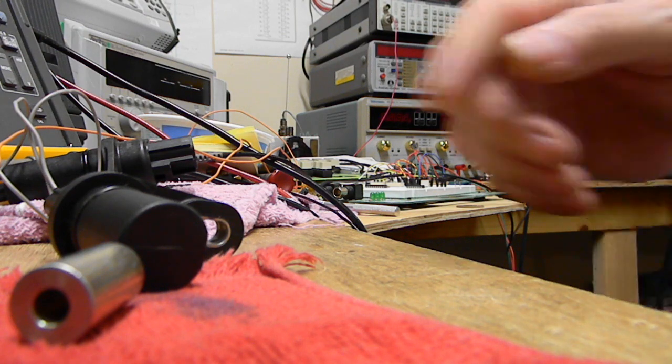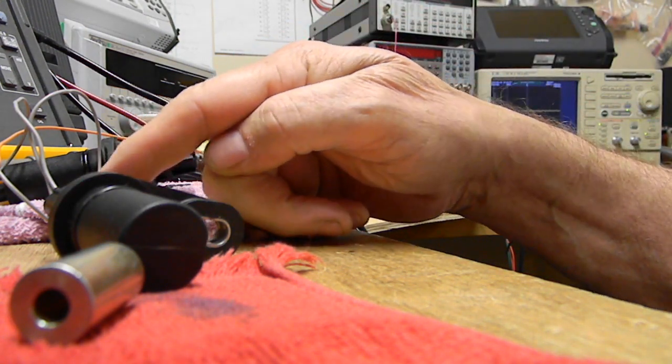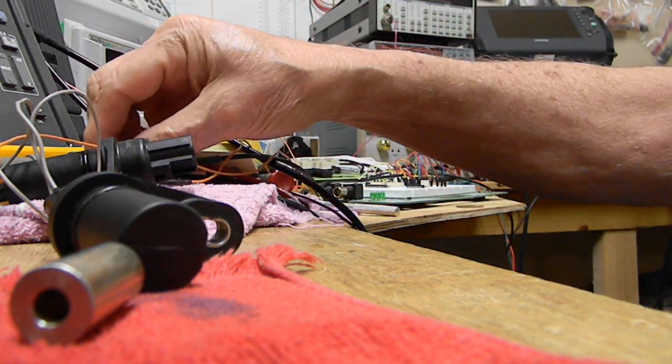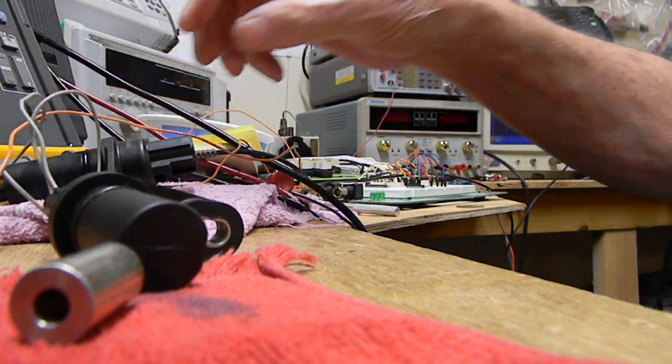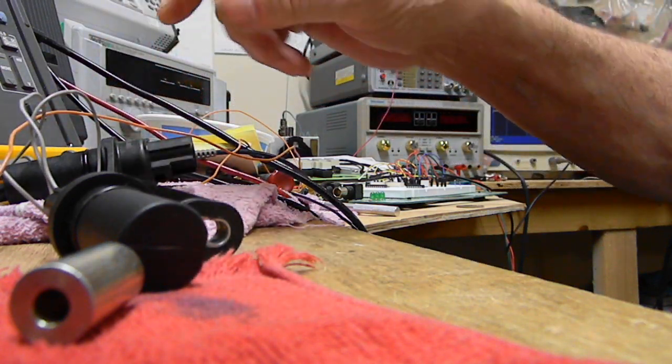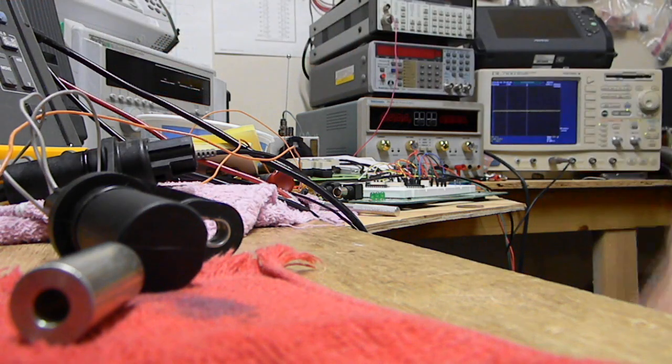So you hook two wires on the connectors. You hook one to the scope probe and you're running one to one. And the other probe you hook it to the other wire for ground.